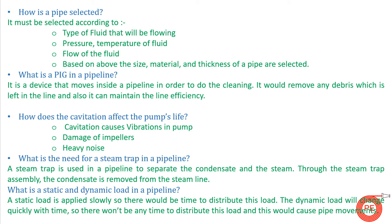The first question is: How is a pipe selected? While selecting a pipe, a designer has to do a lot of research. Pipe is selected based on the type of fluid that will be flowing through the pipe, the pressure and temperature of the fluid, and flow of the fluid. These are the three basic things which a designer has to know before a pipe has to be selected. After that, based on these three things, we select the size, material, and thickness.